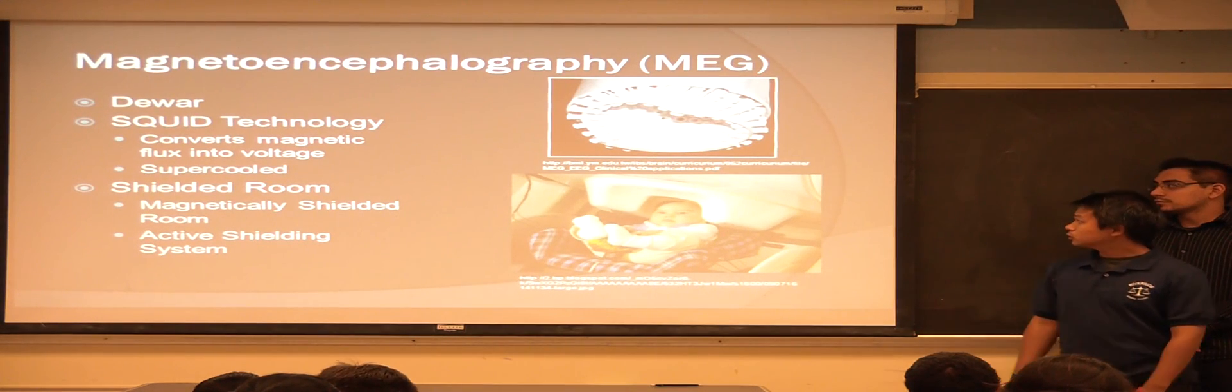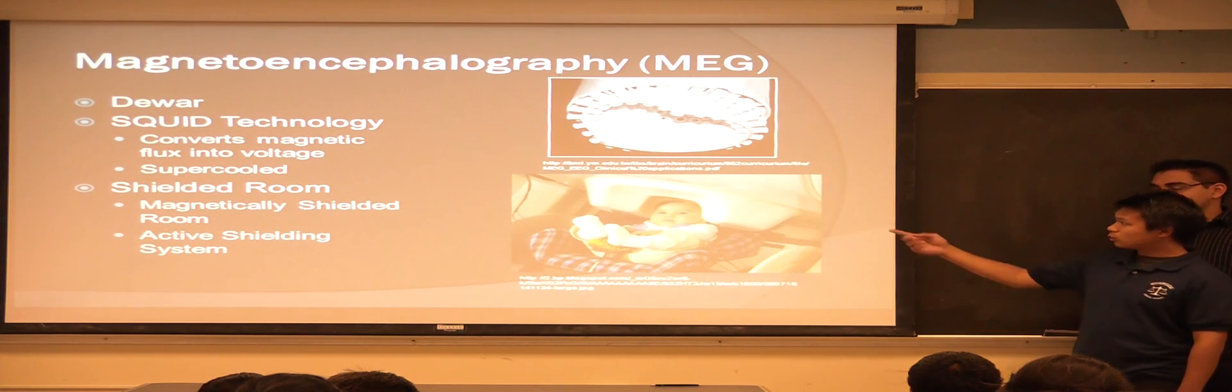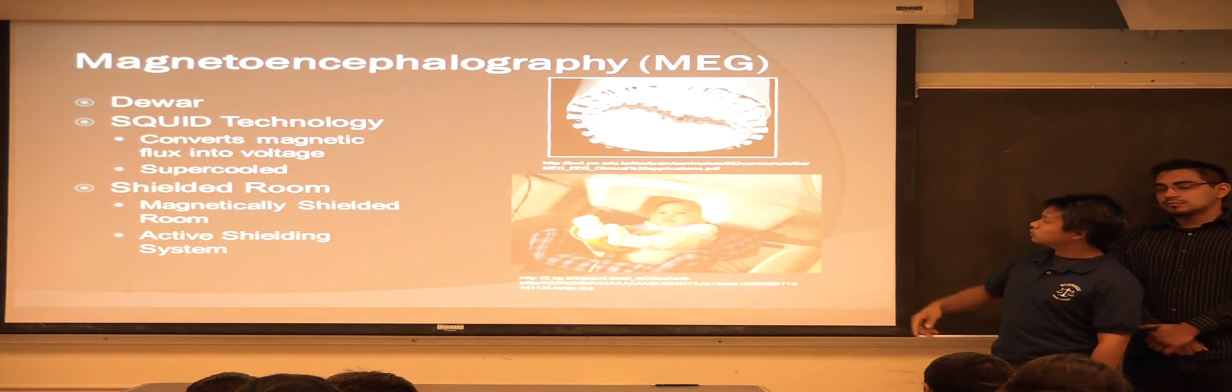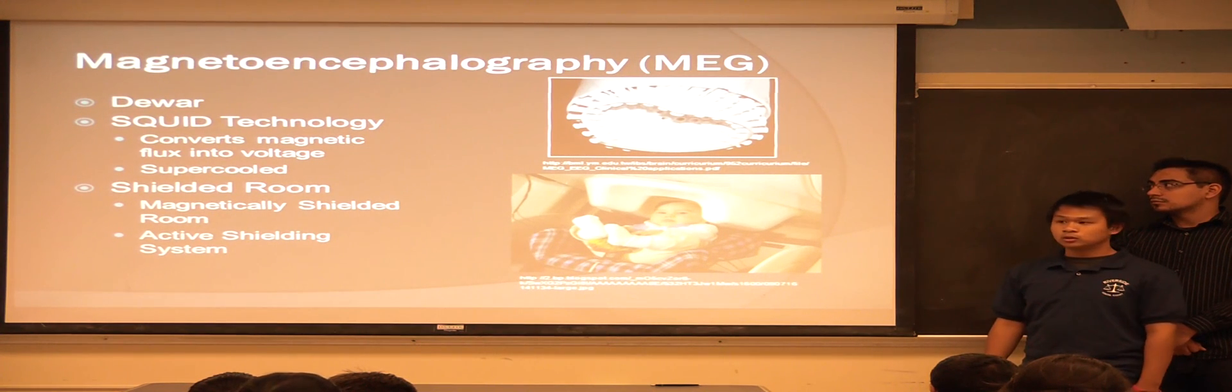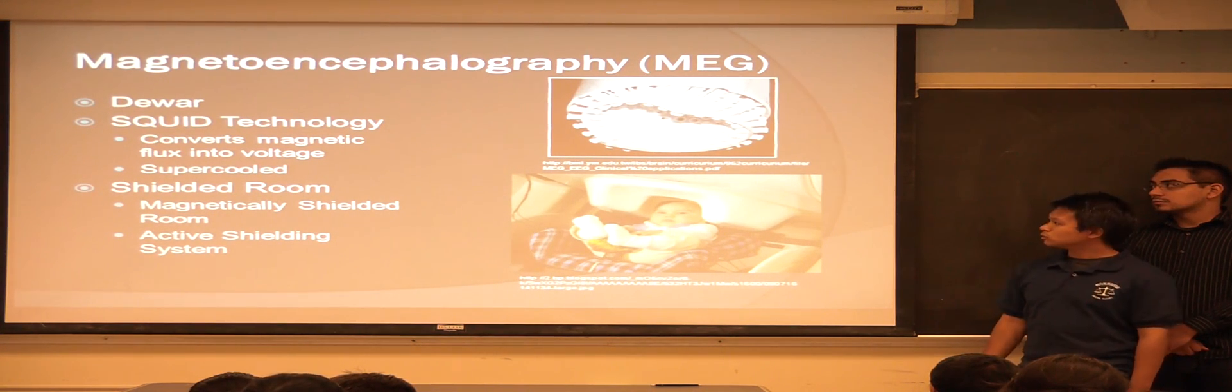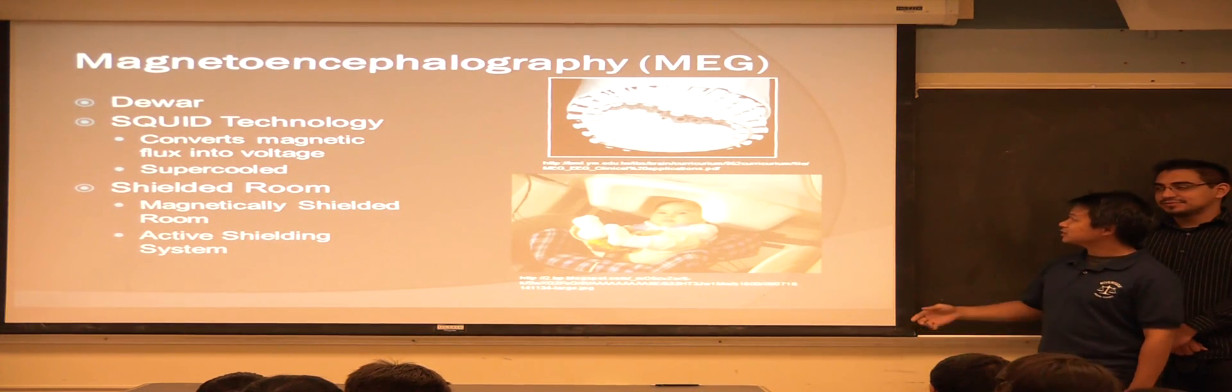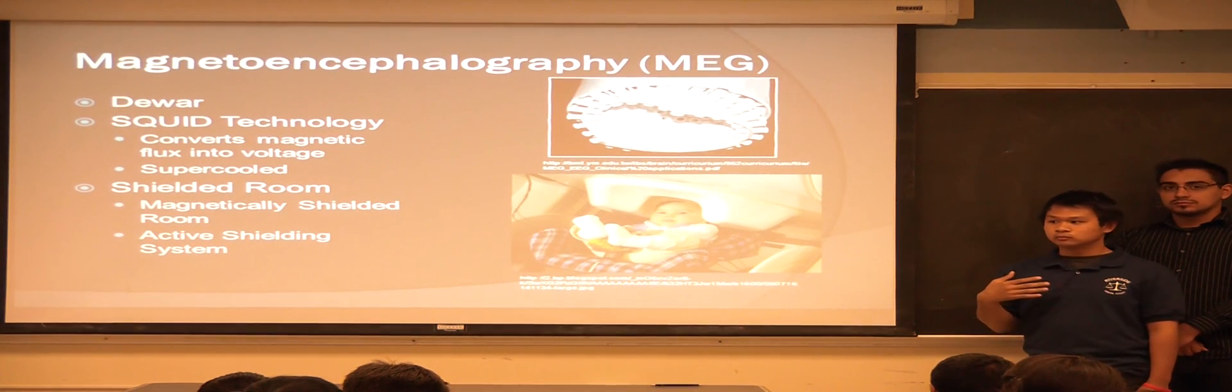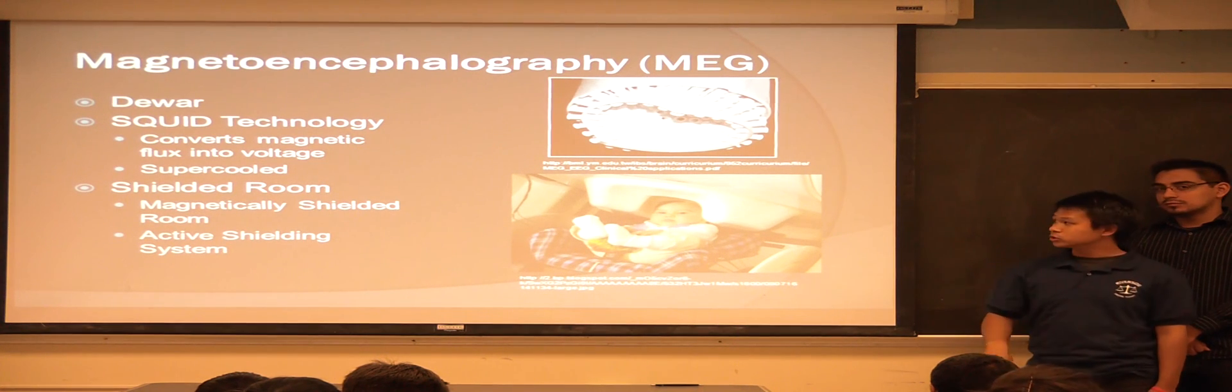So, it's composed of basically two things. Dewar is just the fancy name for the element that it uses. Dewar is composed of SQUID technology, which is short for superconducting quantum interference device. Basically, what it does is each point of those things converts a magnetic wave into a voltage, and that just shows up on the computer screen.